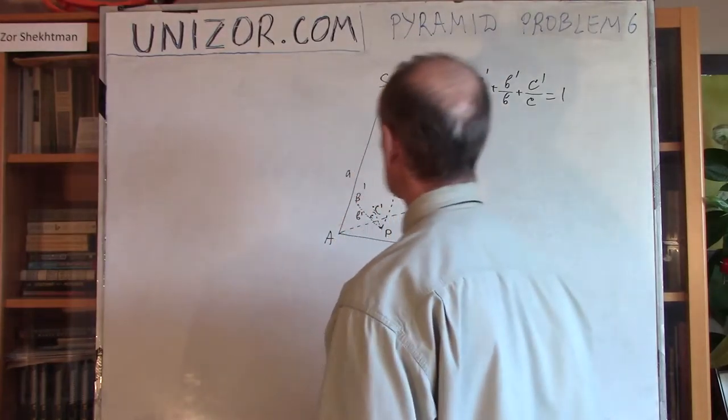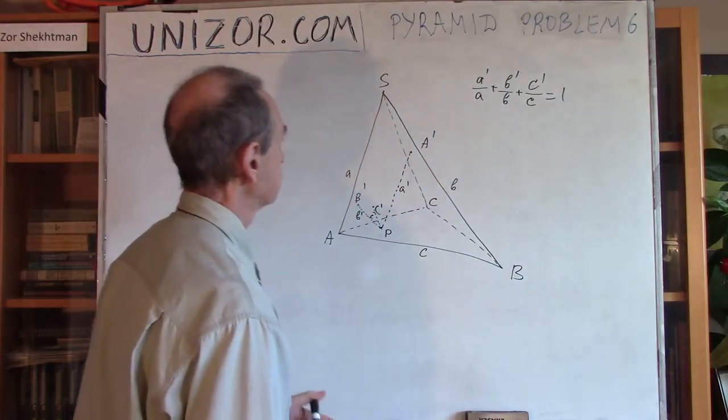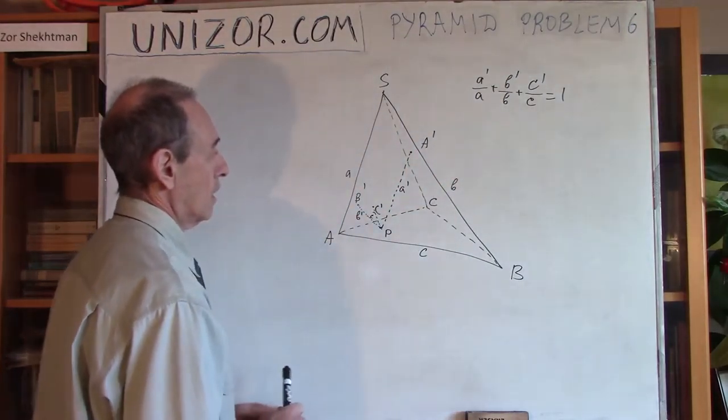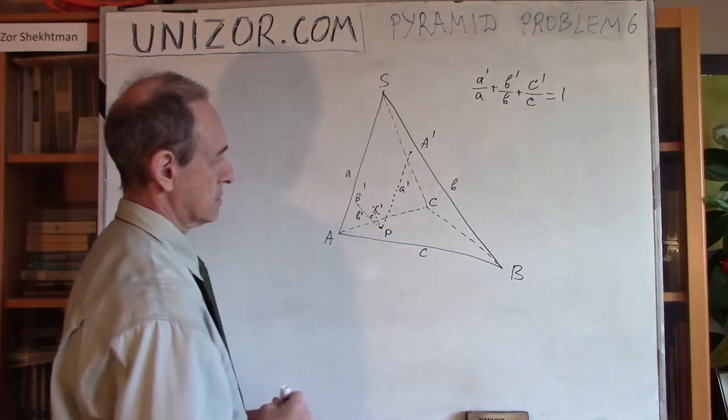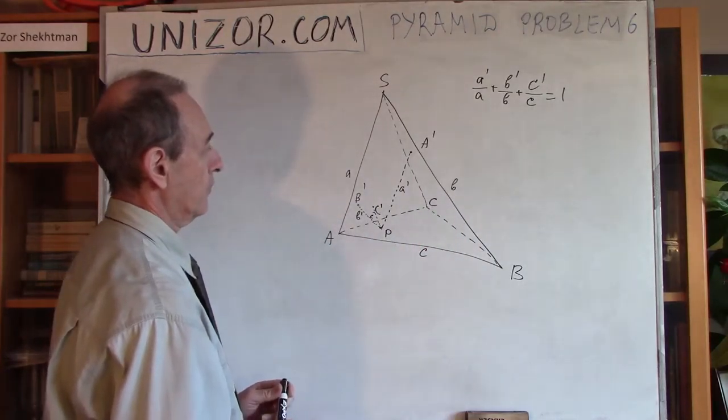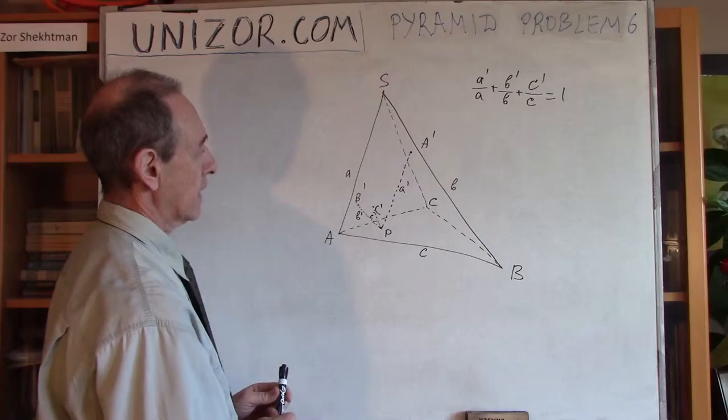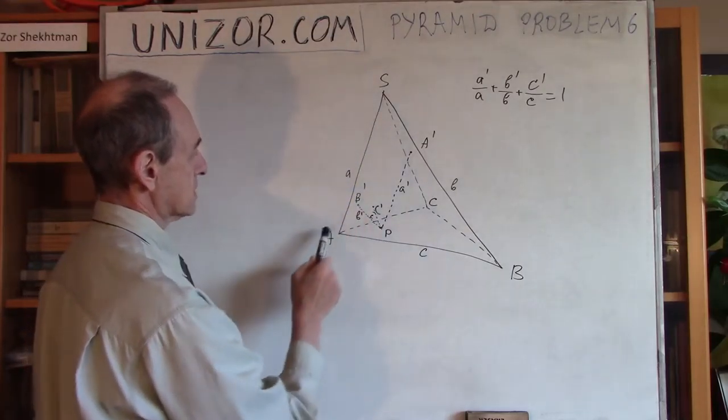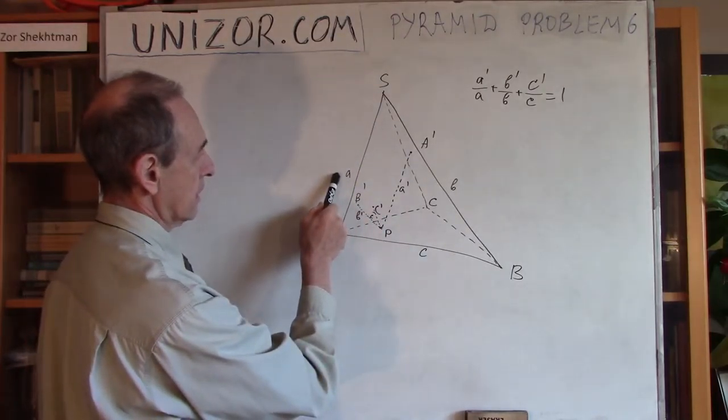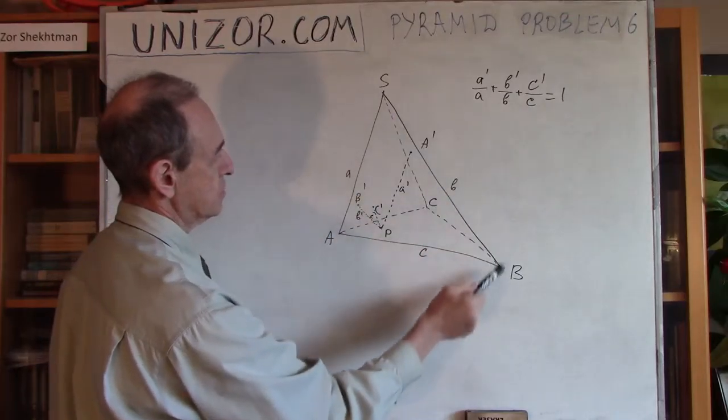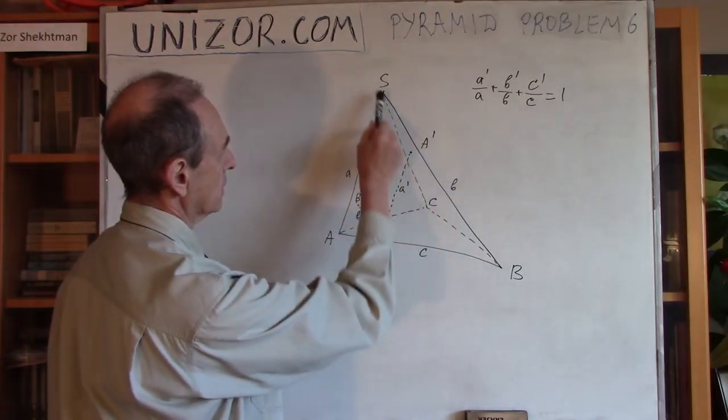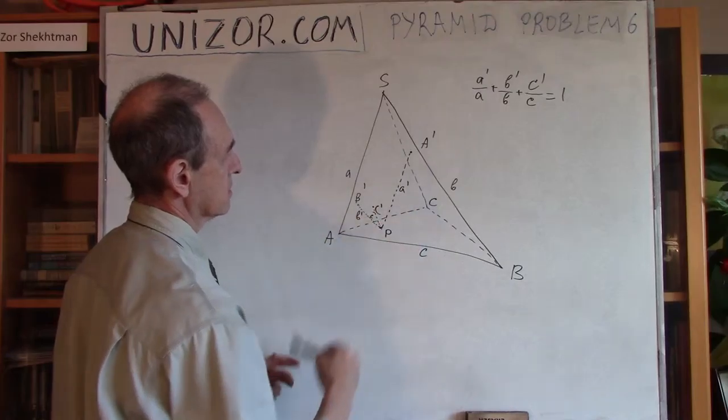It's problem number six under pyramids. After you've done that, you can listen to this lecture and I'm going to present the solution myself. So what's the problem? We have a triangular pyramid. S is apex, ABC is the base. I know lengths of the side edges. SA has a length a, SB has a length b, and SC has length c.